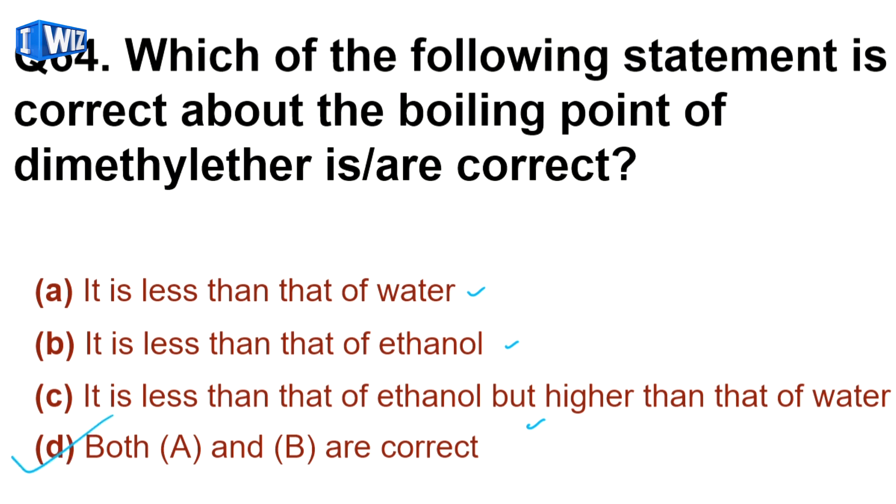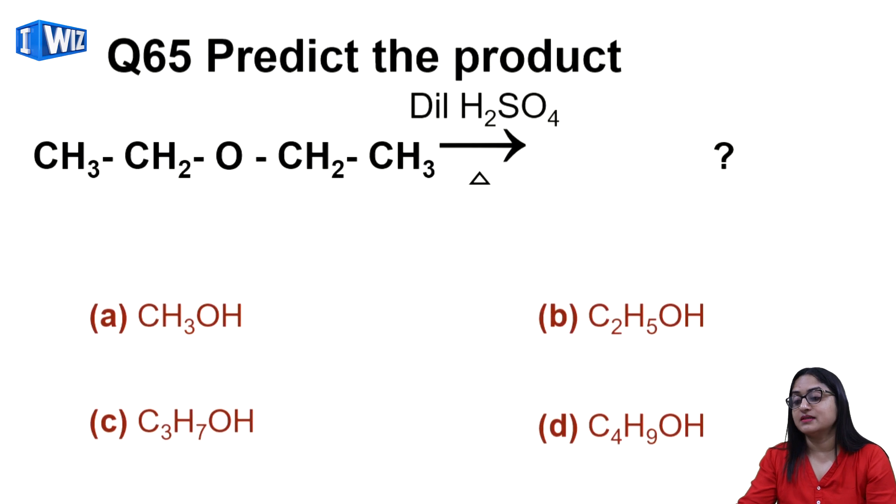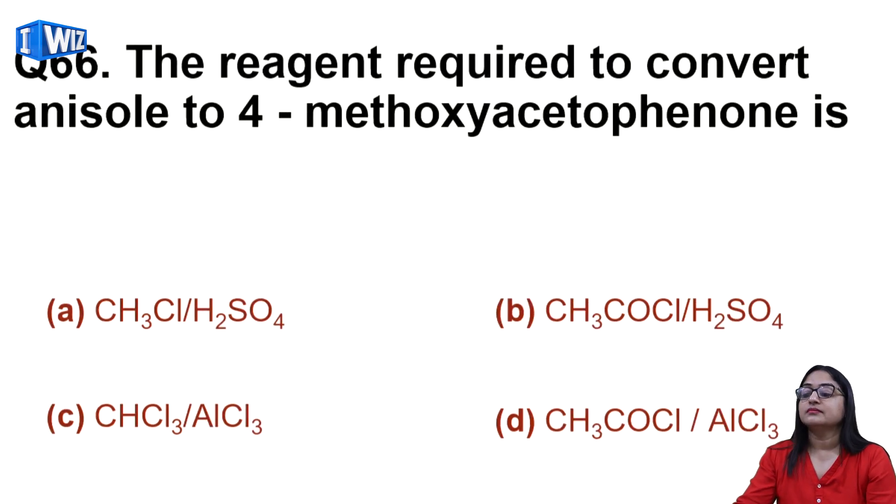Next is predict the product. You have ether and you treat ether with dilute sulfuric acid, you will get alcohol. Alcohol dehydration - from two alcohol molecules dehydration gives ether. Next is the reagent required to convert anisole to 4-methoxyacetophenone.